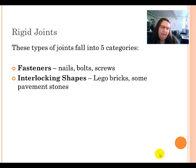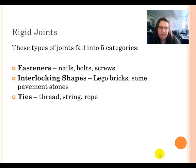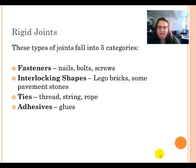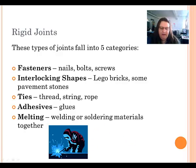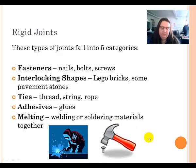The second type are interlocking shapes, like those found in Lego, and you can also see them in paving stones. The third type of rigid joint is ties — you can tie things together with string, thread, or rope. You can also use adhesives such as glues or rubber cement. And you can melt things together by welding or soldering, or melt plastic together. There is a picture of someone welding two pieces of metal together, and another using fasteners with a hammer.